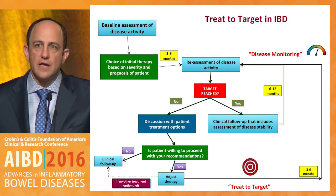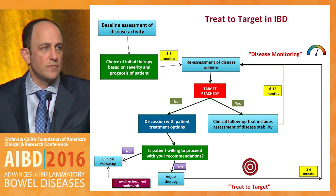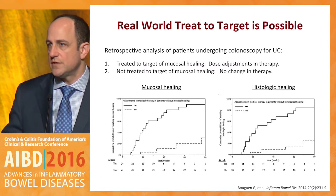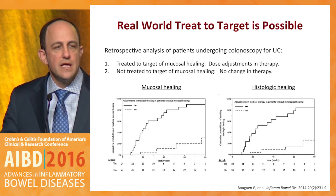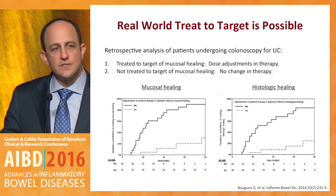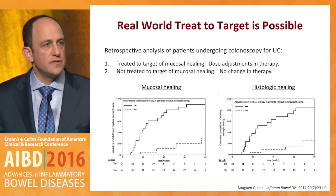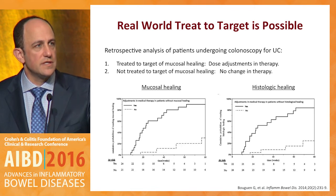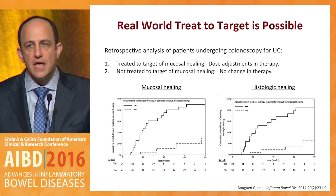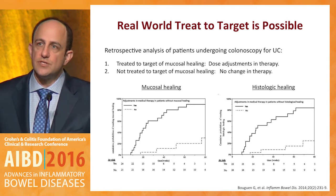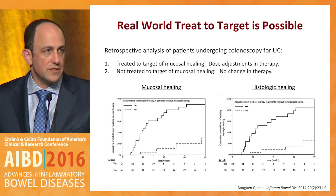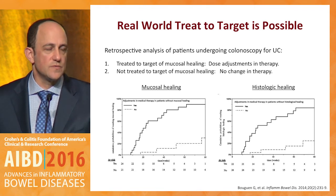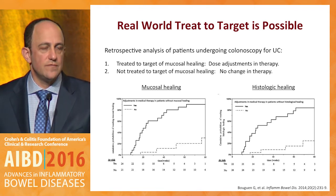In the real world, we've learned from a variety of studies, including a retrospective analysis by Bill Sanborn and colleagues, that treat-to-target is actually possible. In this example of ulcerative colitis patients in their practice, if they were not healed when they had an endoscopy, they were offered adjustments in either dose of their existing therapy or stepping up to the next level. On average, with two adjustments, they were able to achieve healing — not only endoscopically but histologically in most patients. So it suggests that moving through these maneuvers can actually achieve the goal we're trying to reach.